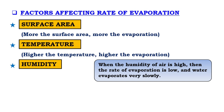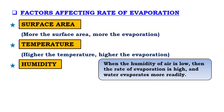When humidity is high, the surface molecules of the liquid evaporate at a low rate, because the atmosphere cannot absorb more water vapor — it already has water molecules present. When humidity of air is low, the rate of evaporation is high and the water evaporates more readily.